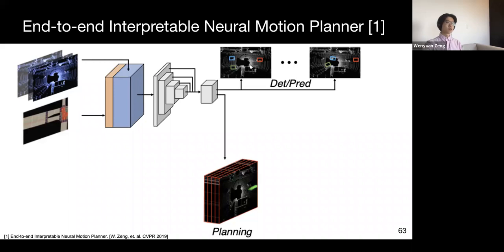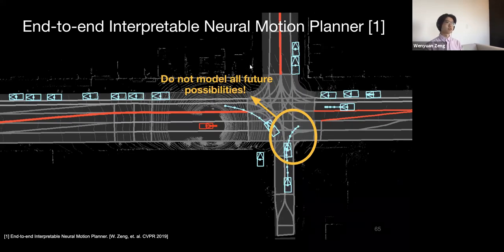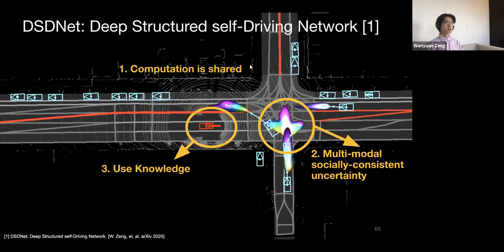However, there are still drawbacks. First, planning is now conditioned on the prediction results, which may cause inconsistent and dangerous planning. And secondly, the model only predicts a single modal future, but the real world future is actually uncertain. So to address these two drawbacks, we propose DSDNet, a deep structured self-driving network that jointly reasons about perception, motion forecasting, and motion planning. Specifically, our method has several advantages. Firstly, computation is shared between modules and thus allows for real-time inference. Secondly, our method explicitly models socially consistent multimodal uncertainty in the future. And finally, our learning-based planner can leverage the power of deep learning and also take traffic rules into consideration in order to guarantee safety.